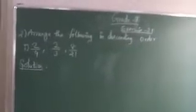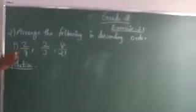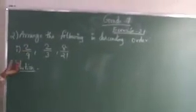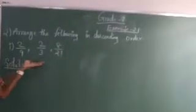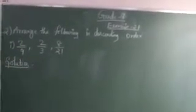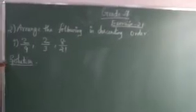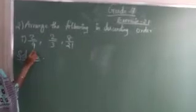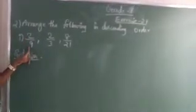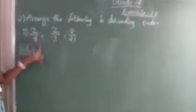Next is Chapter 2: Fractions and Decimals. Now we solve the exercise problem. Arrange the following in descending order. Fractions are given and you have to arrange them in descending order, which means from largest to smallest. The fractions given are 2/9, 2/3, and 8/21. These are all proper fractions because the denominator is greater than the numerator in each case.